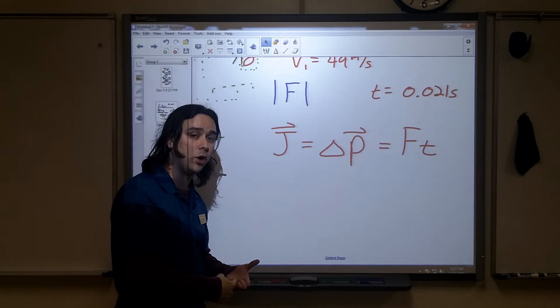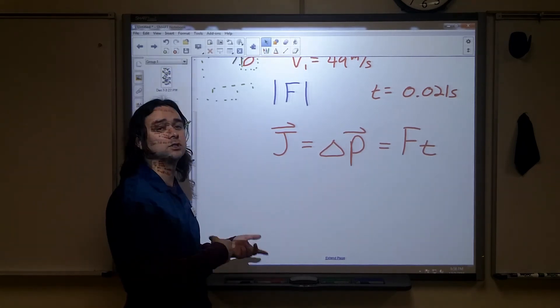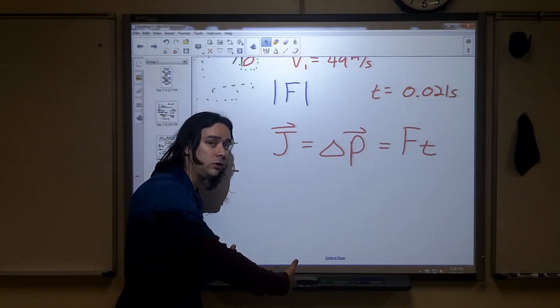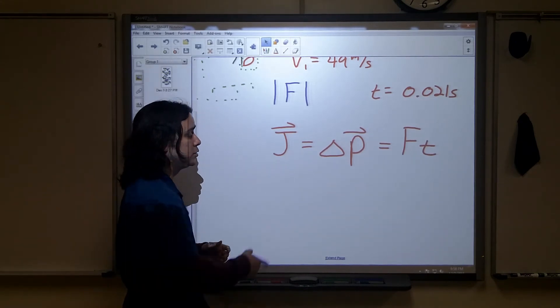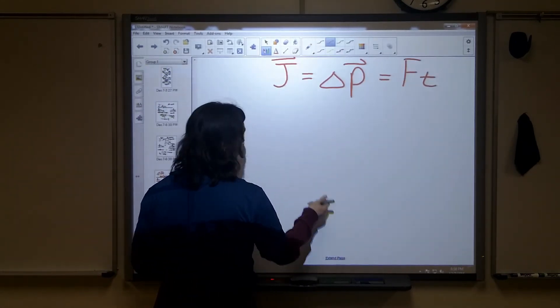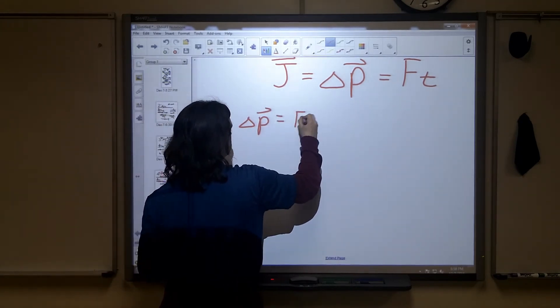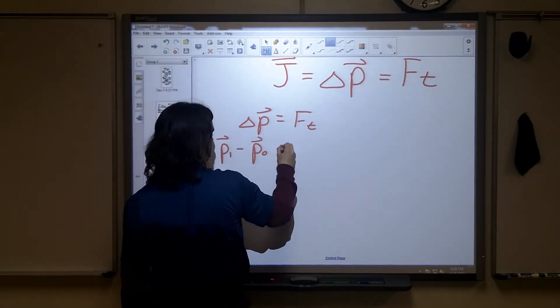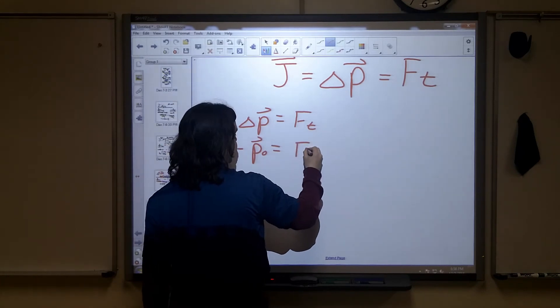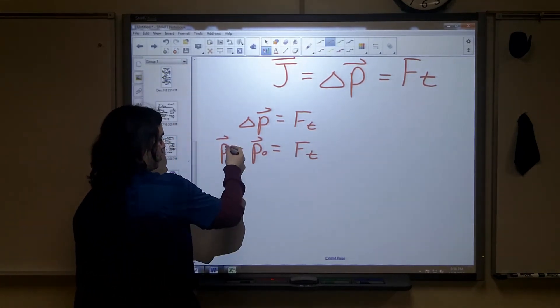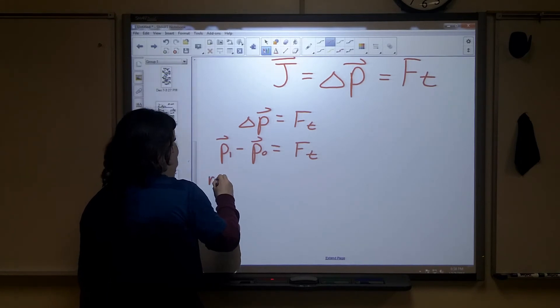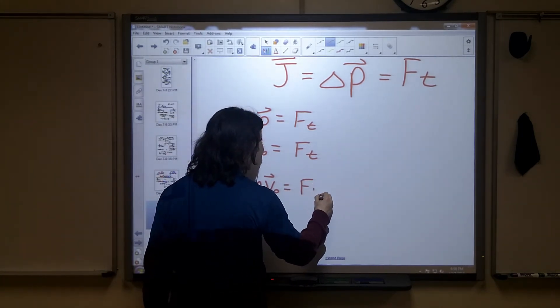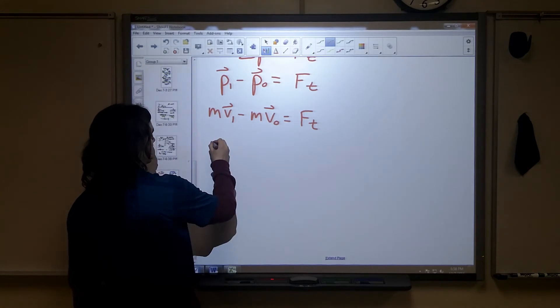And so now we can find the force of the foot on the ball, and by Newton's third law, that number, the magnitude, will be the same as the force of the ball on the foot, which is what we're asked for. So what we need is delta P. We can take delta P is going to be equal to Ft. Delta P is going to be P final minus P initial. Our final momentum minus our initial momentum, that'll be equal to our force times our time. Well, our final momentum will be our mass times our final velocity minus our mass times our initial velocity, and that will be equal to the force times the time. Now that I've got all this set up, I can start plugging things in.